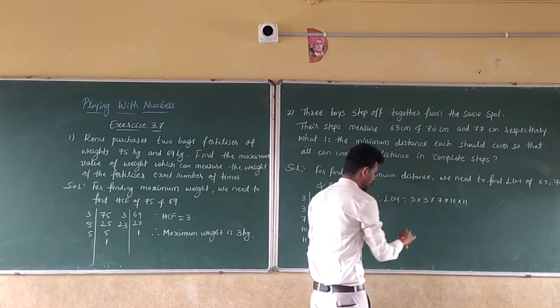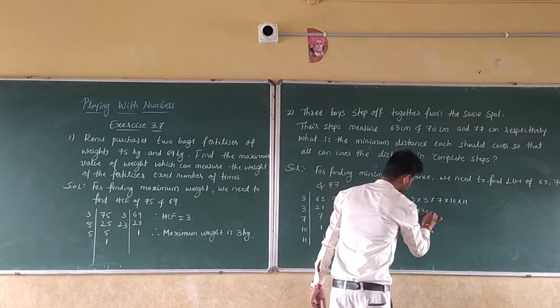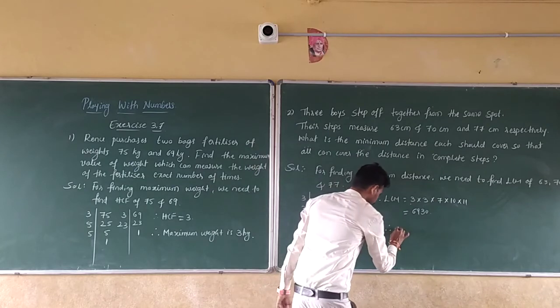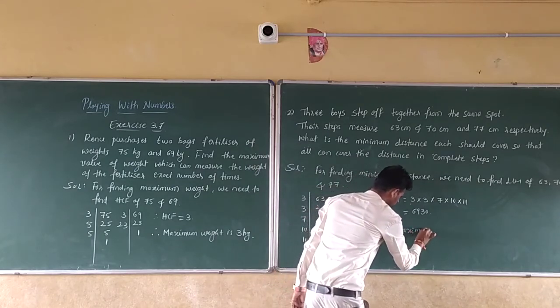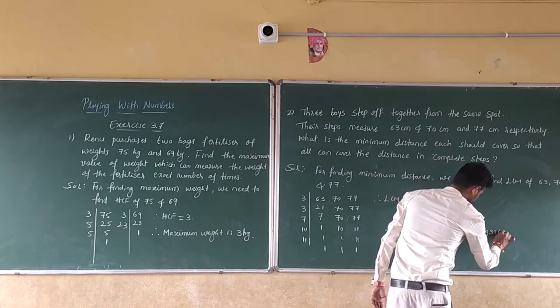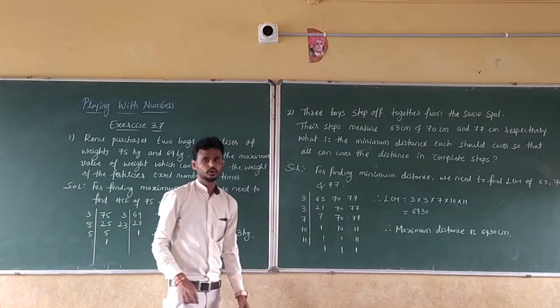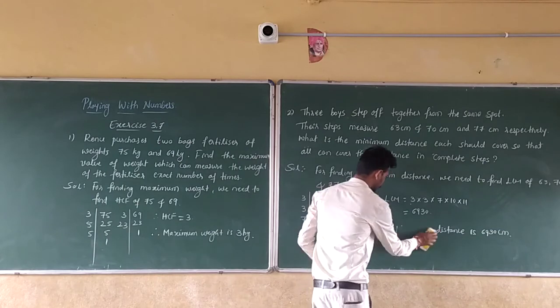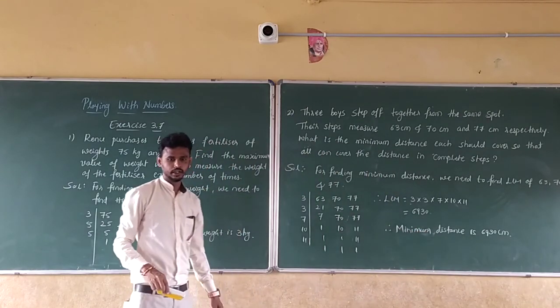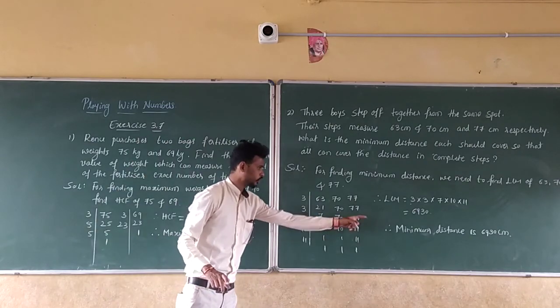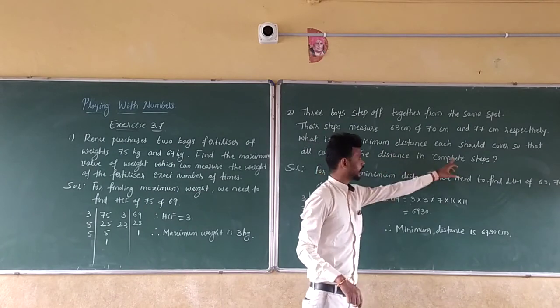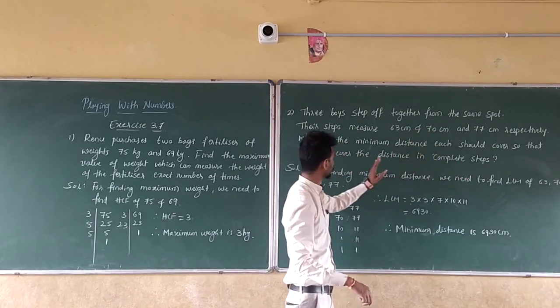So multiply all these, you get 6,930. Maximum distance is 6,930 centimeters. Of course, minimum distance is 6,930 centimeters, so that all can cover the distance in complete steps. So this is the solution of the second question.